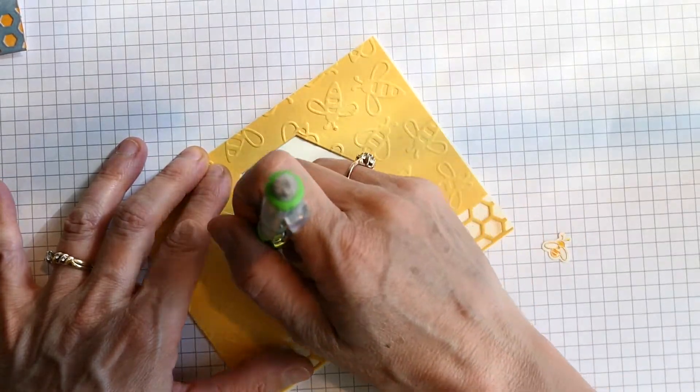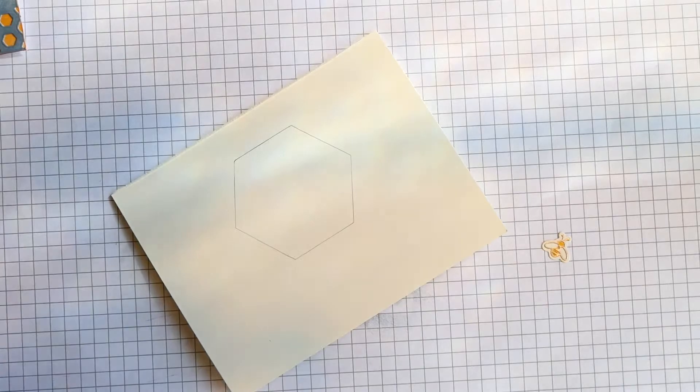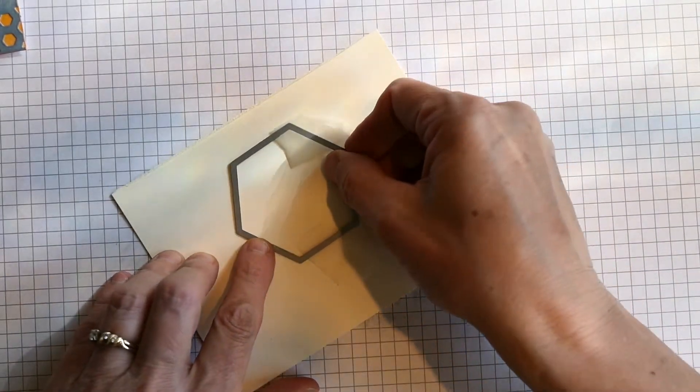To create the hexagon that would actually make the window in the base, I simply traced it for positioning of where to put the die.